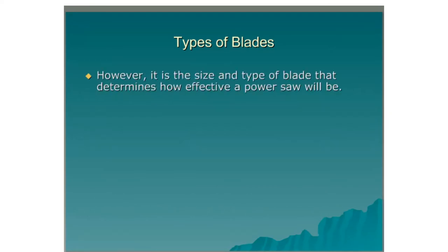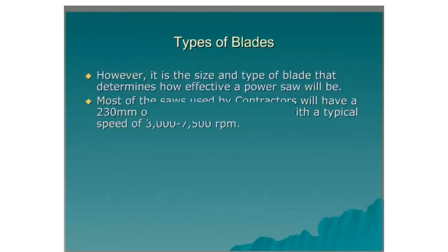Types of blades. It is the size and type of blade that determines how effective a power saw will be. Most of the saws used by contractors will have a 230mm to 300mm diameter blade with a typical speed of 3000 to 7500 rotations per minute.